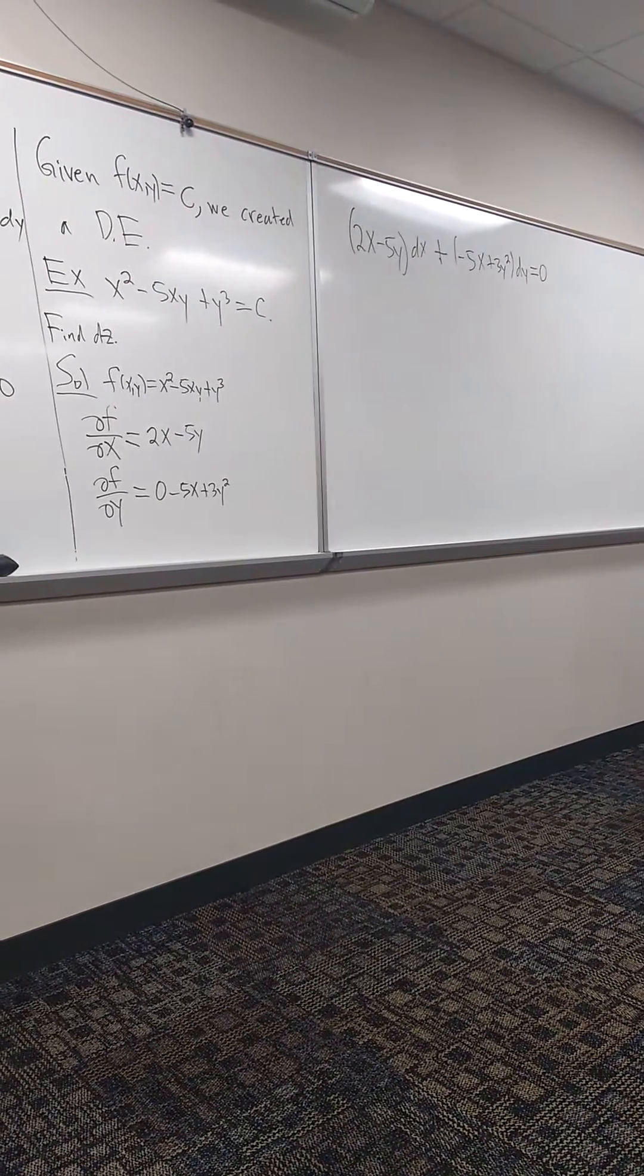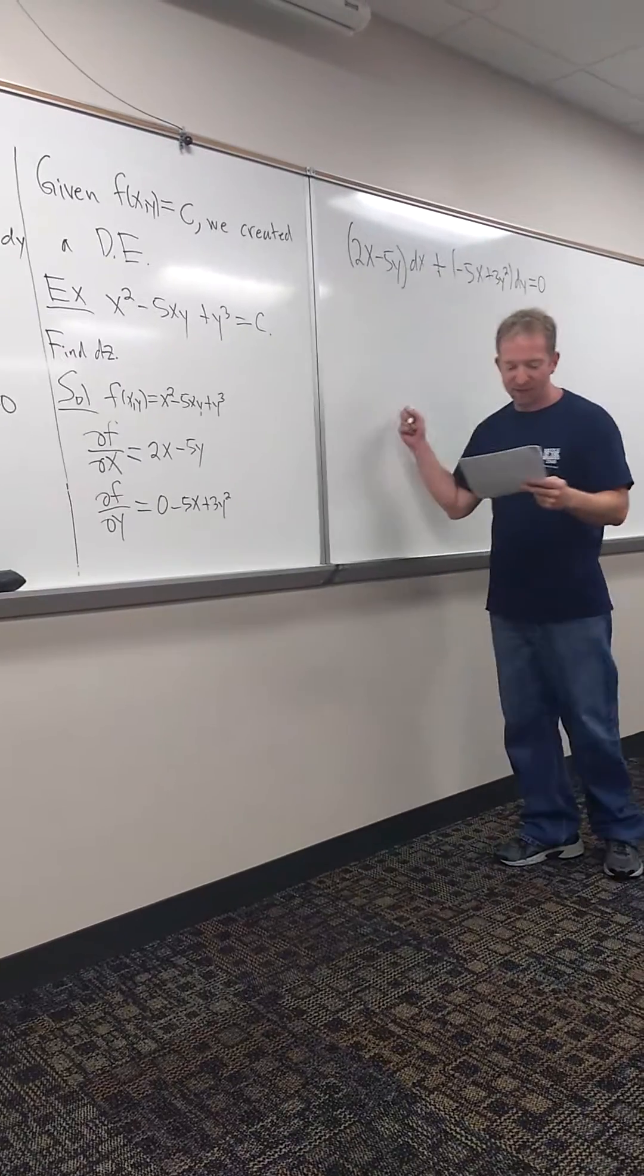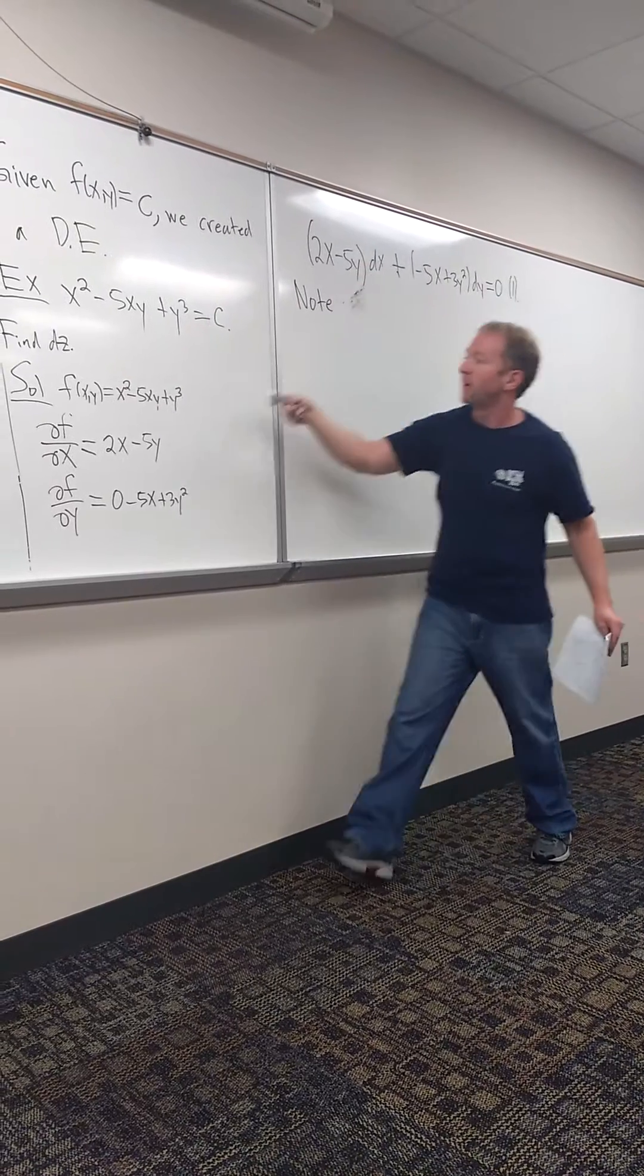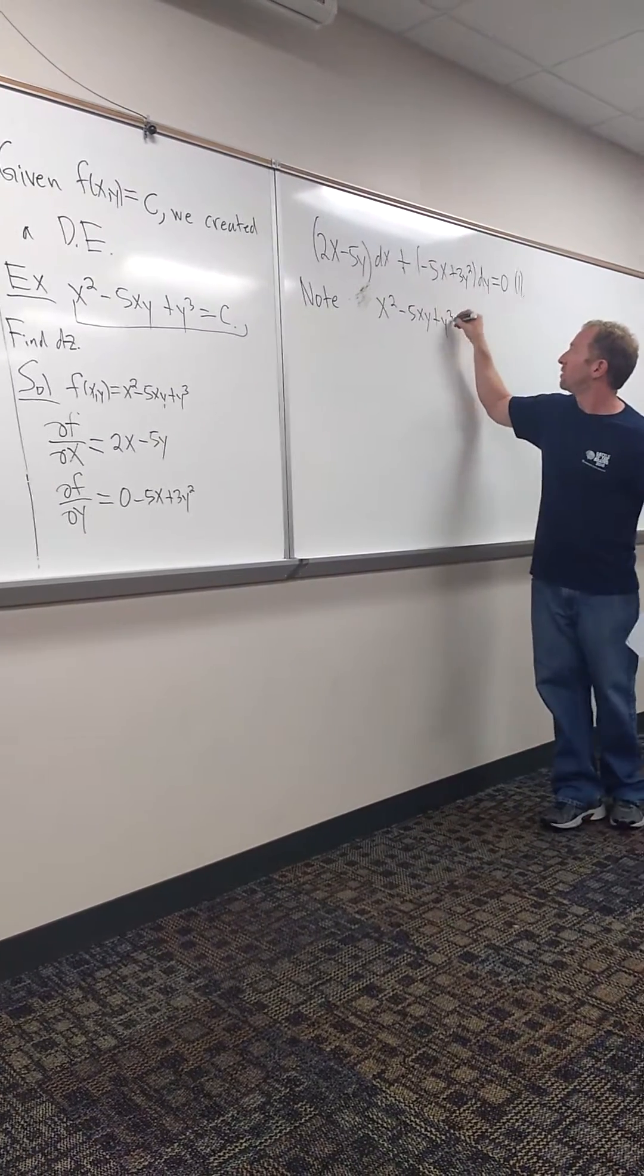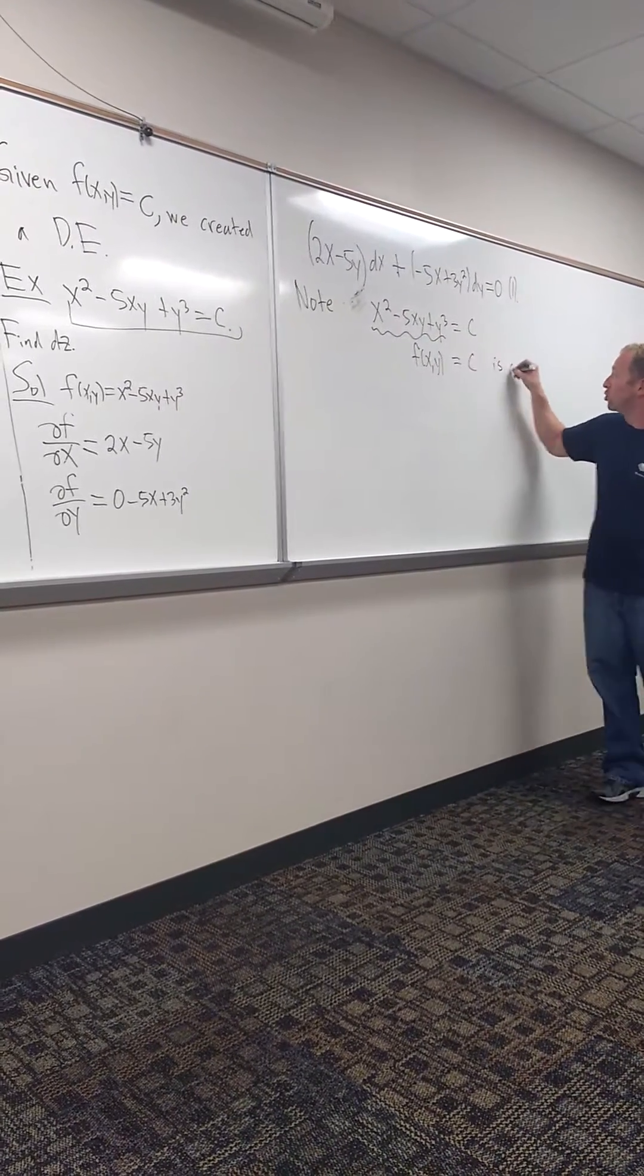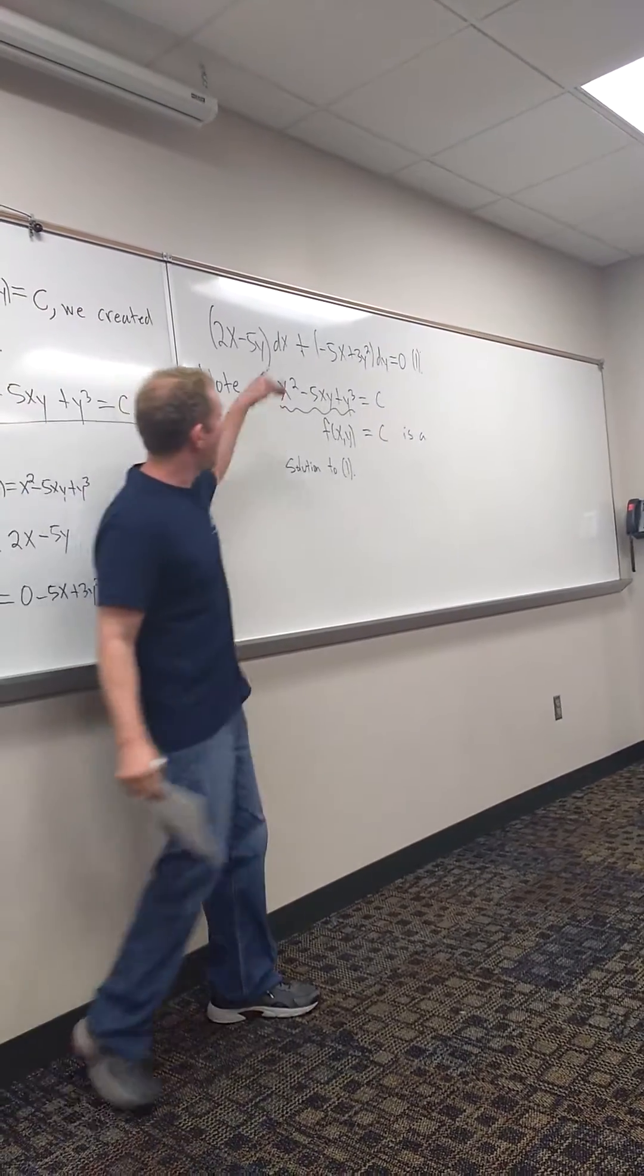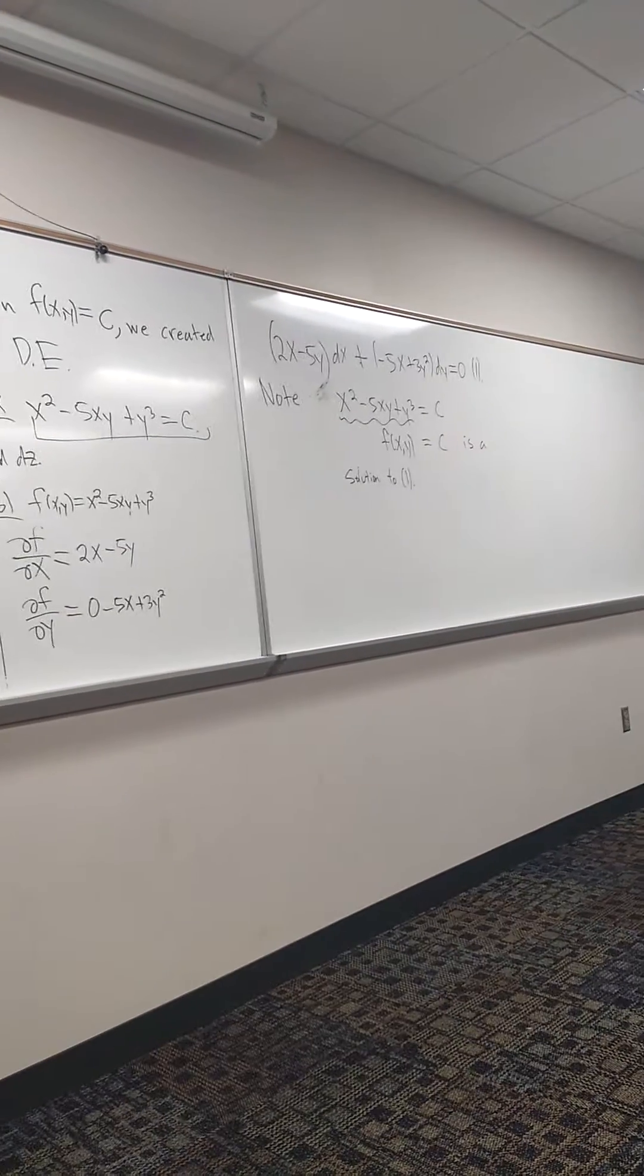So given a function that's equal to c, f of xy equals c, we can create a dE. So note, let me give something a name here. So this here, let's call this one. And so note, this is the key point. Note f of xy, or rather let me write it this way. This function here. So x squared minus 5xy plus y cubed equals c. So this is f of xy equals c. Note this is a solution. This is super important. It's a solution to one. Super key. Because in every single homework problem, after you're done, you're going to take everything you have and you're going to set it equal to c. Right? And that's the reason why. This moment right now, like this, this is the reason why.